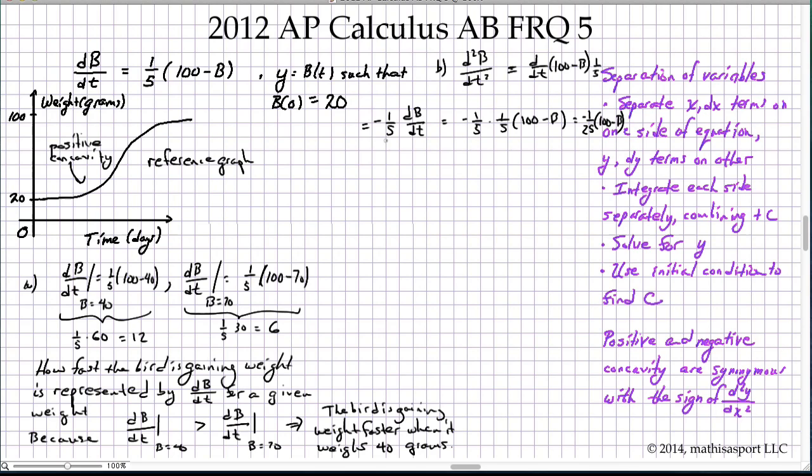And so we can simply state the graph shown has regions of positive concavity. However, d²B/dt² is always negative. This quantity is always negative and therefore B of t cannot be represented by the graph.